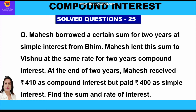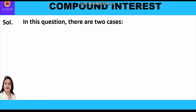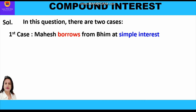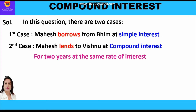Find the sum and the rate of interest. This is a very important question which involves both simple interest as well as compound interest. In the first case, Mahesh borrows from Bheem at simple interest. In the second case, Mahesh lends to Vishnu at compound interest. The time period is two years and the rate of interest is the same in both cases.